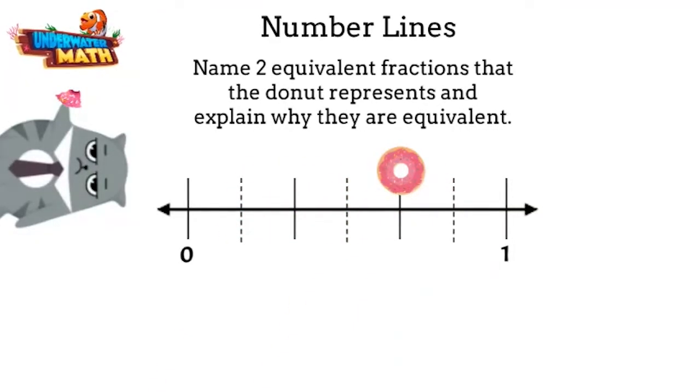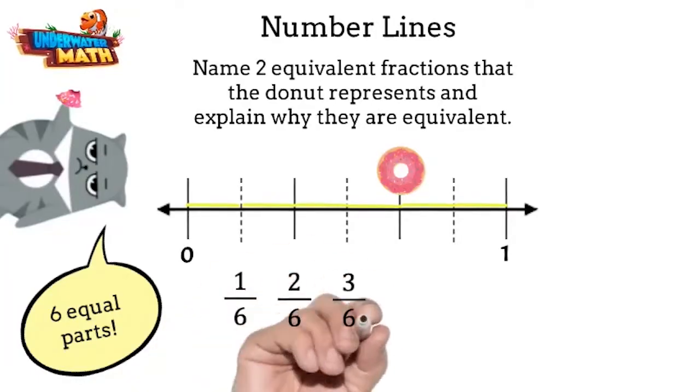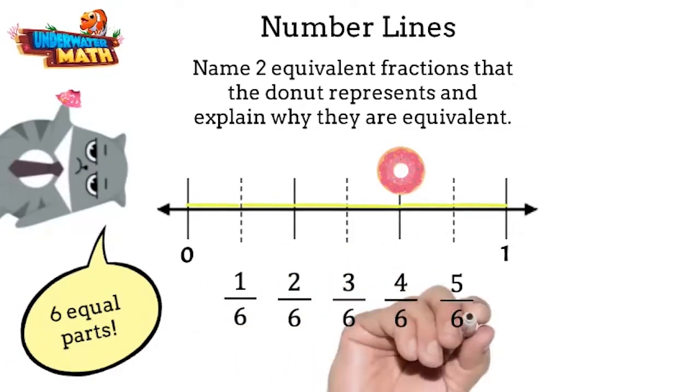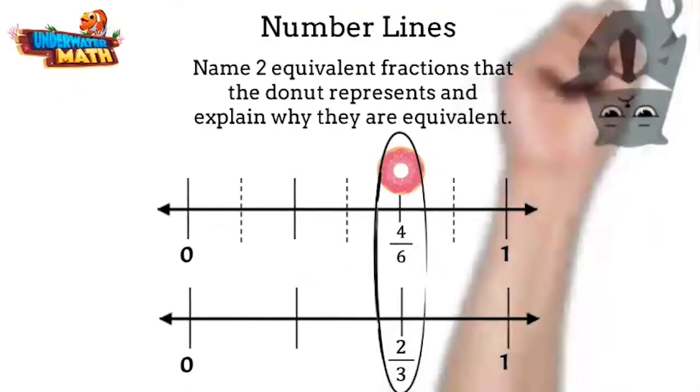There are one, two, three, four, five, six total parts, and one grumpier kitty if I don't get that donut. That's right, so each of these tick marks are one sixth. Now we can see on the number line the donut represents four sixths. Both of these fractions mark the same spot as the donut on the number line, so we know they are equivalent.